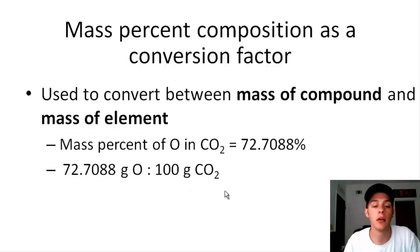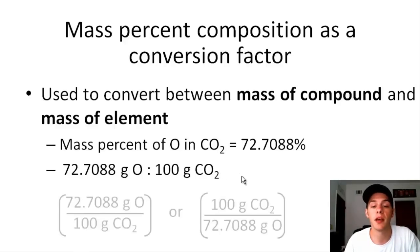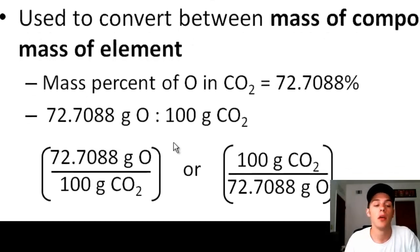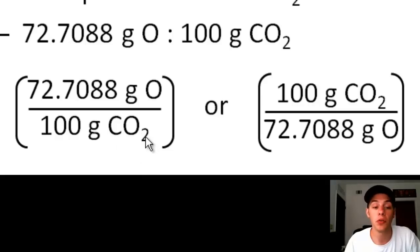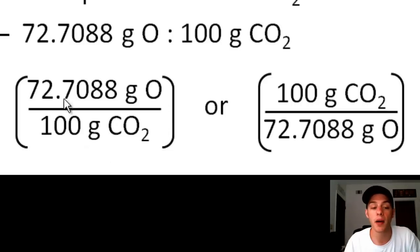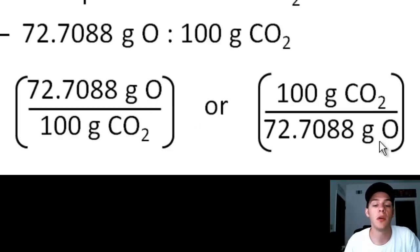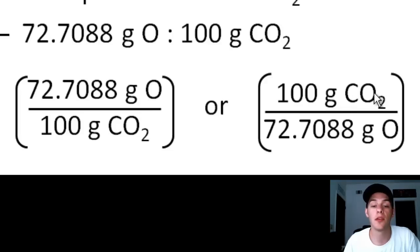This ratio can take the form of two conversion factors. If you start with a mass of CO2 and want the mass of oxygen, put 100 grams of CO2 on the bottom and 72.7088 grams of oxygen on top. Or, if you start with the mass of oxygen and want the mass of CO2, put 100 grams of CO2 on top and 72.7088 grams of oxygen on the bottom.